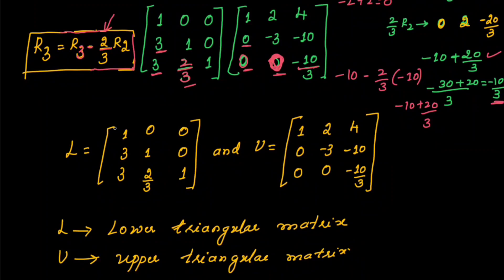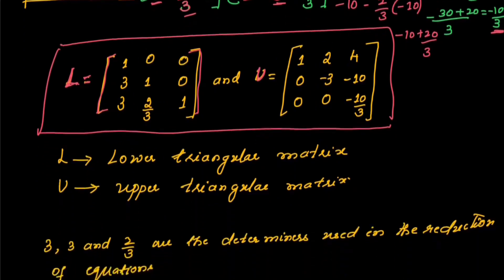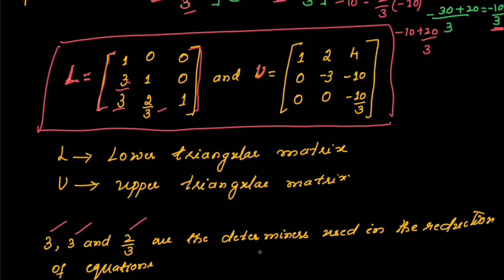Finally, write all the elements neatly. The result is the lower triangular matrix L and the upper triangular matrix U. The given matrix A is now decomposed into two simpler matrices. The determiners 3, 3, and 2/3 used in the reduction are placed in L. The main aim is to simplify a given matrix into two simpler matrices — this process is called decomposition or factorization, and the method used here is LU decomposition. Your answer will have two matrices: the lower triangular matrix L and the upper triangular matrix U.